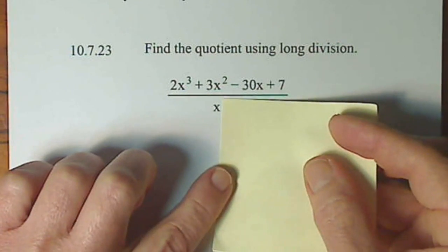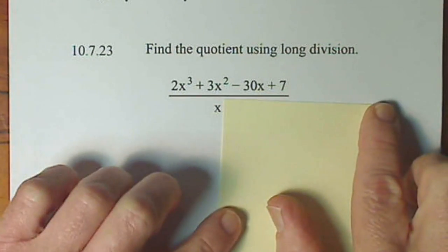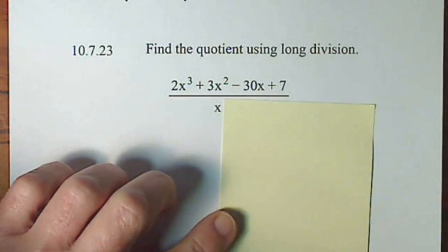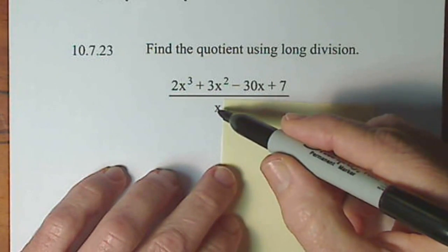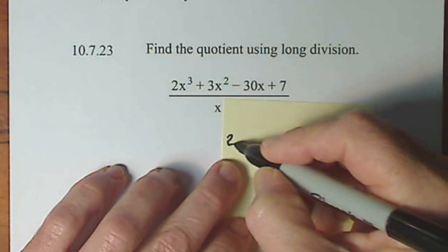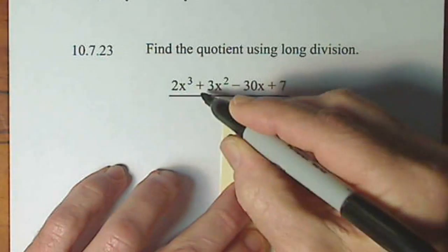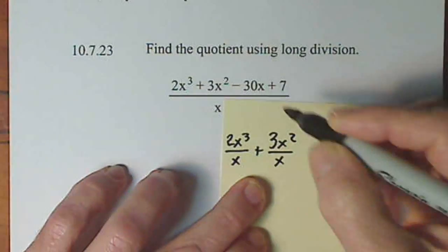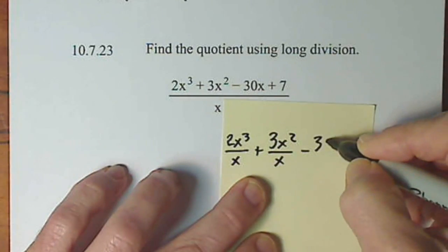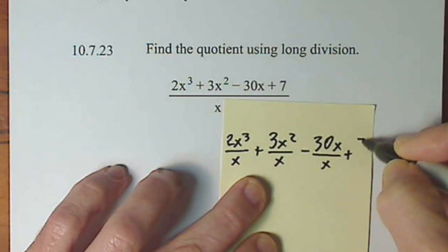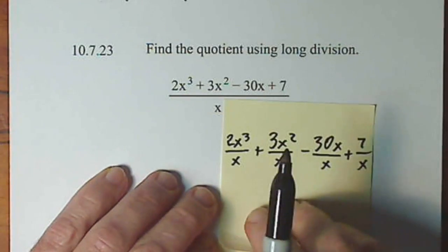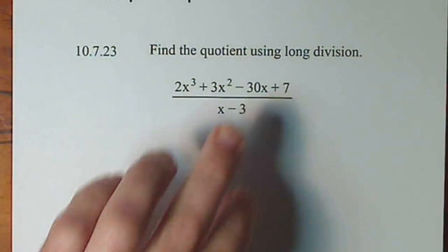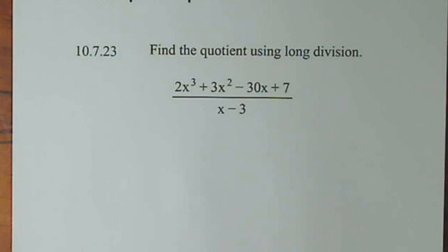If this was written with just an x in the denominator, if that was the only thing down there, then you could simply rewrite this polynomial with each term over an x, so I could say 2x to the third over x plus 3x squared over x minus 30x over x plus 7 over x, and you could clean up each of these terms. But because you have addition or subtraction in the denominator, you can't just break it up and clean it up. You have to use long division here.